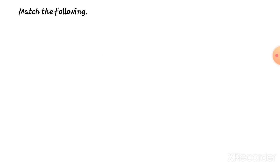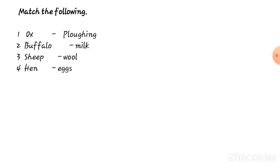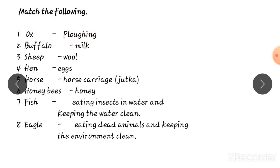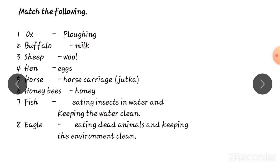Next, in the textbook, there is another activity to match animals with their uses. Ox — plowing. Buffalo gives us milk. Sheep gives us wool. Hen gives us eggs. Horse helps for transportation. Honeybees give us honey. Fish eat insects in water and keep the water bodies clean. Eagle eats dead animals and keeps the environment clean. Children, use a pencil and complete that activity.